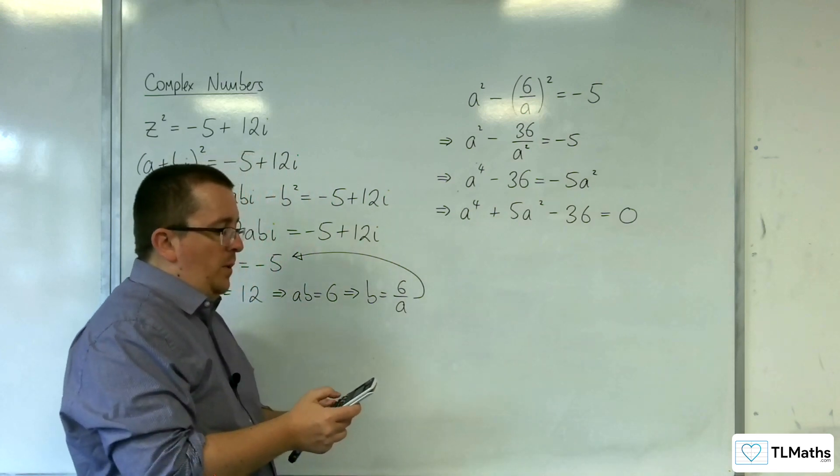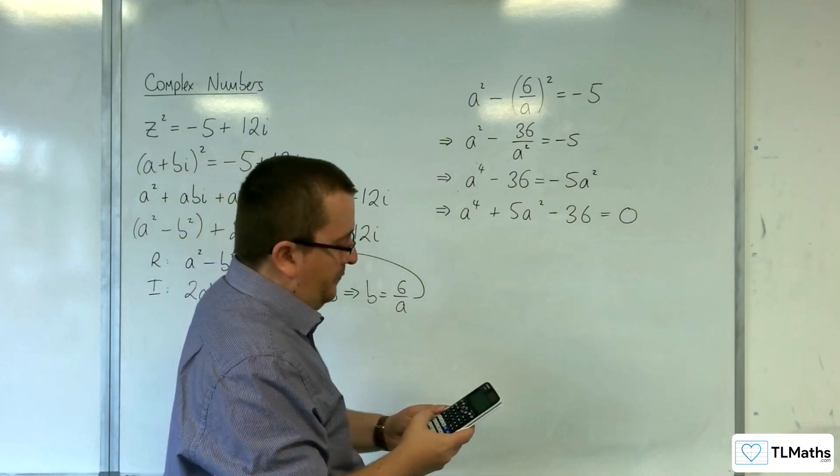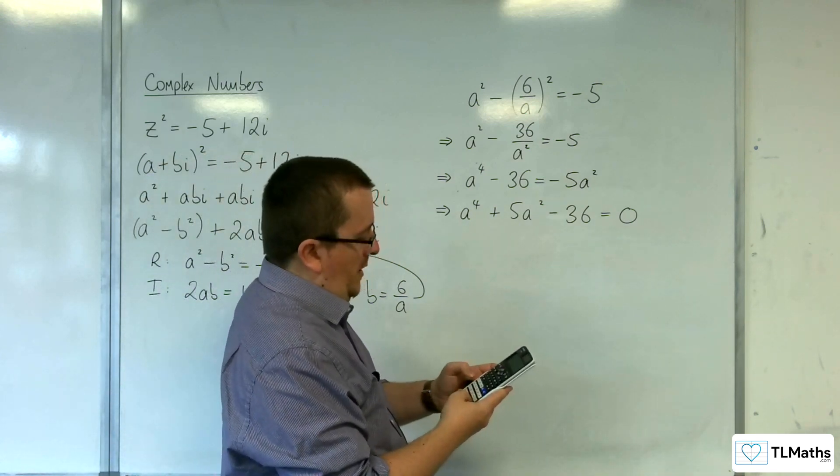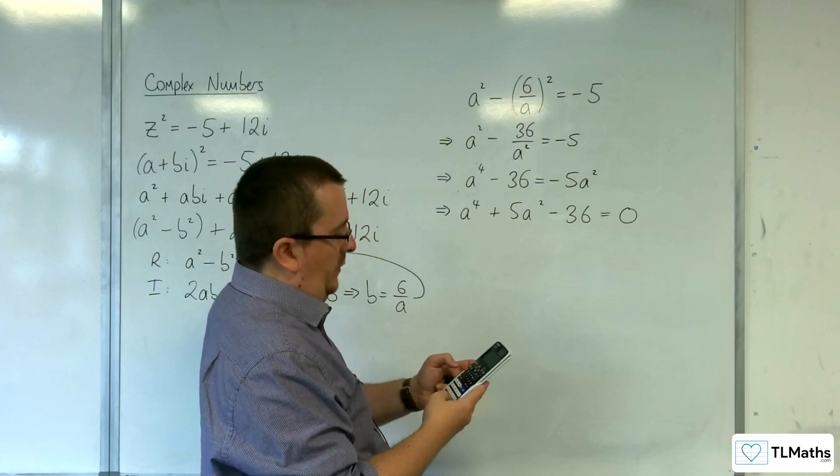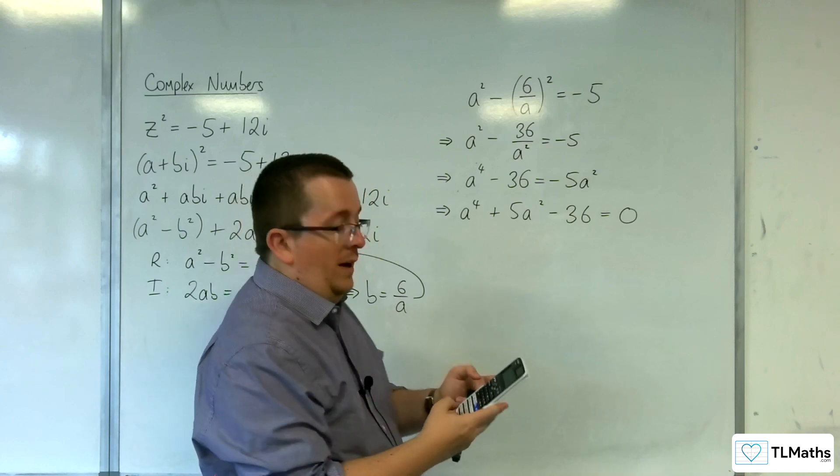So we want to solve the quadratic. So if we go into our quadratic solver, if you can't spot it. 1, 5, -36. And we get 4 and -9.